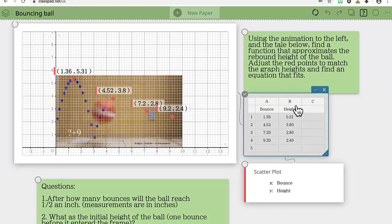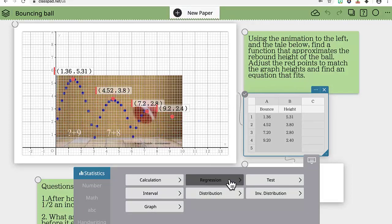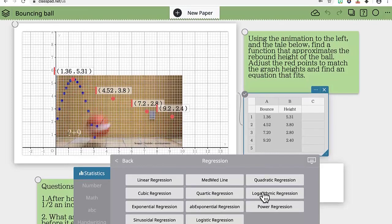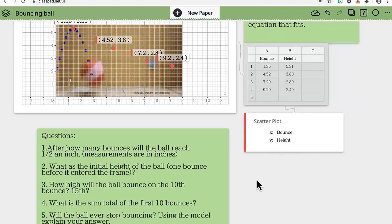Now if you want to find a regression equation, we highlight A and B, get our statistics, and we want to do a regression. From there we can choose the type of regression. Each individual student can choose some regression. I won't do that part so I don't ruin the surprise.